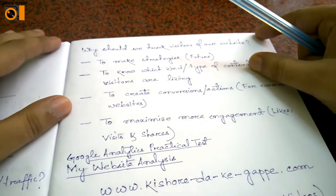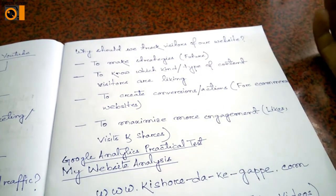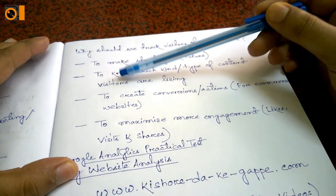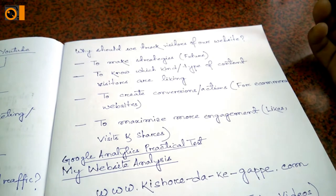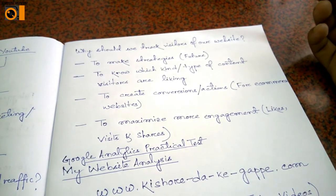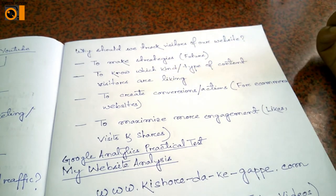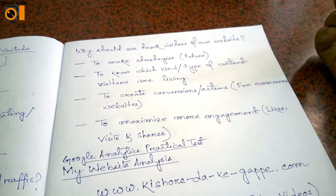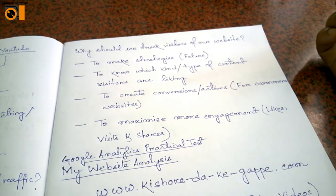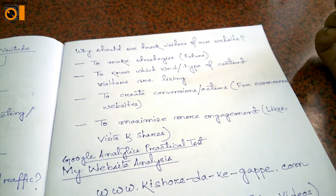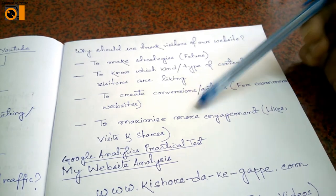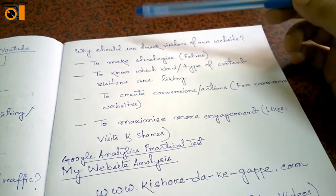Why should we track visitors? There are key points. First, to make future strategies — the goals which we will be taking in future — for that we have to know who the visitors are coming to our website, and for that we take the help of Google Analytics. Second, to know which kind and type of content visitors are liking. You will understand the genre or subject matter of content you have to provide to target maximum visitors.